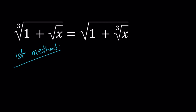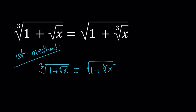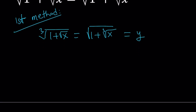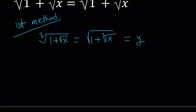For my first method, I'm going to set these equal to something. Substitution is a really cool method and we're going to use it. So let's go ahead and set both of these expressions equal to y. After this we get two equations, or a system of equations. We can take the first one and cube both sides, which is going to give us: 1 plus square root of x equals y cubed.